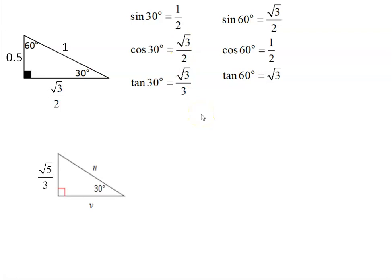And using those values works exactly the same way. Let's say I want to find a here. I know it's opposite my 30, and I'm looking for the hypotenuse. So opposite and hypotenuse is sine. I'd replace sine 30 with the 1 half.